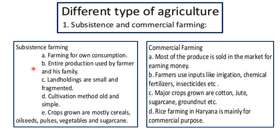Now we will see the difference between subsistence farming and commercial farming. In subsistence farming, farming is done for own consumption, while in commercial farming produce is sold to the market for earning purpose. In subsistence farming, the entire production is used by the farmer and his family, while in commercial farming, inputs like irrigation, chemical fertilizers, and insecticides are used to increase production. Land holdings in subsistence farming are small and fragmented, getting smaller due to the law of inheritance.